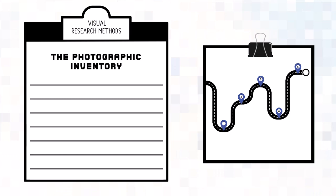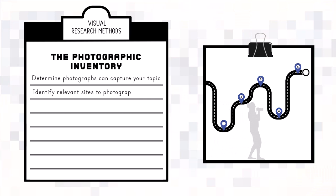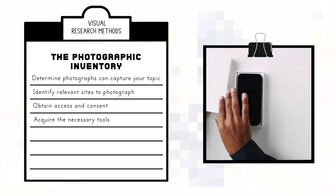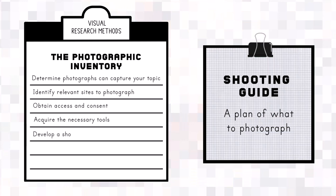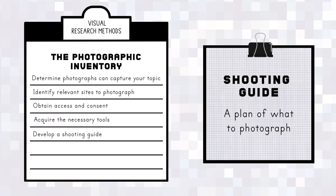Here are steps for the photographic inventory. Determine that photographs can capture your topic of study. Identify relevant sites to photograph and obtain access and consent. Acquire the necessary tools — a digital camera or smartphone with a camera will suffice. Develop a shooting guide, which is the visual equivalent of an interview guide. It outlines what will be photographed.